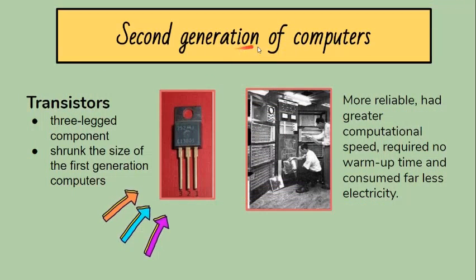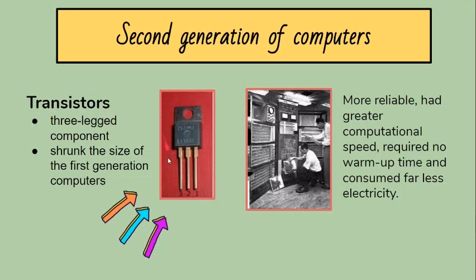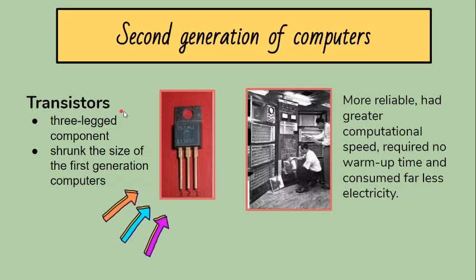For the second generation of computers, transistors replaced vacuum tubes, allowing computers to become smaller, faster, cheaper, more energy-efficient, and more reliable.